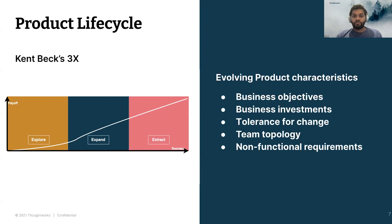Similarly, as the product lifecycle changes, it also dictates that the architectural governance model should change. As the product strategy and business objectives change, there's a need to adapt to different team structures, budgeting, and non-functional requirements. And obviously the architectural governance practices and processes need to evolve accordingly.